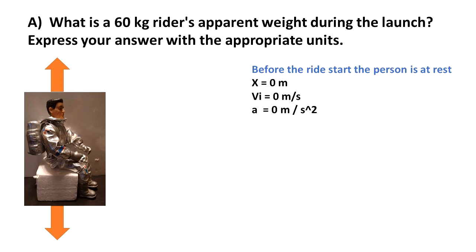That person has a mass of 60 kg. The person is at the origin, there is no velocity because he is at rest, and there is no acceleration.